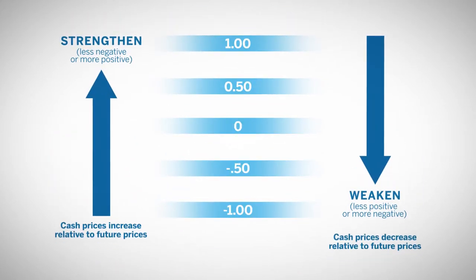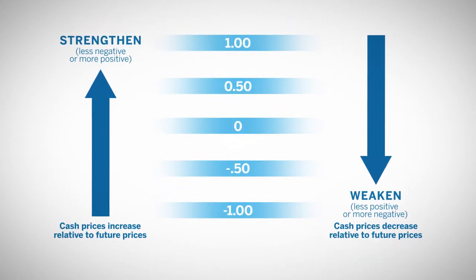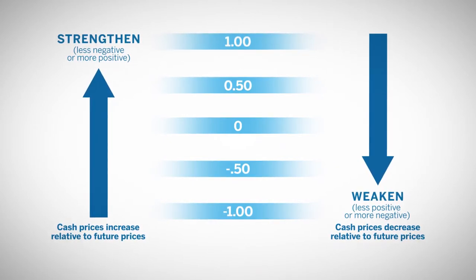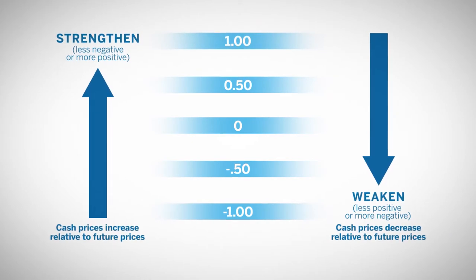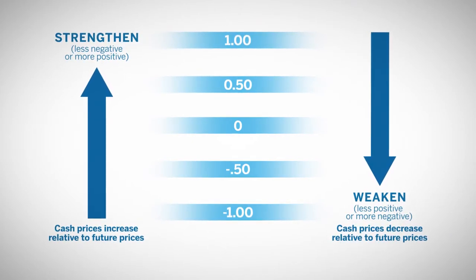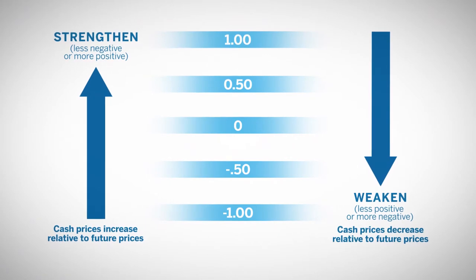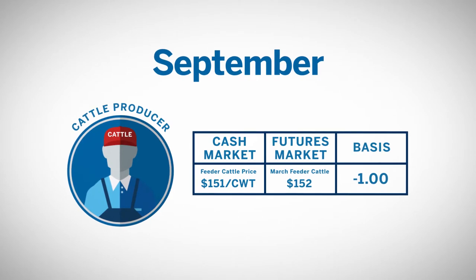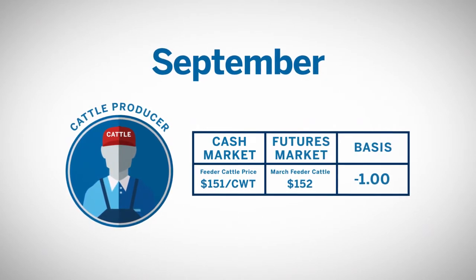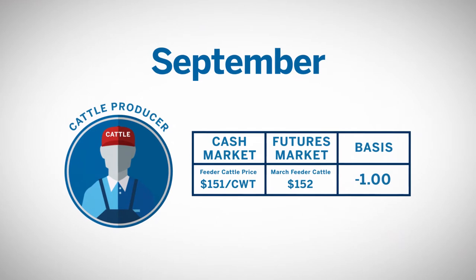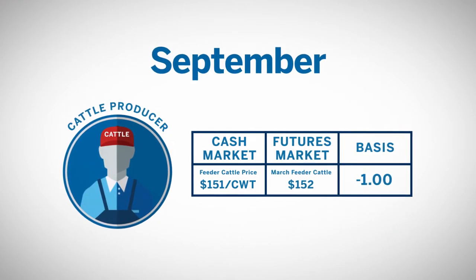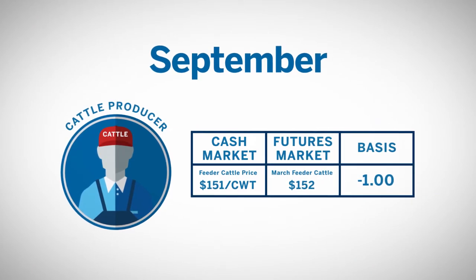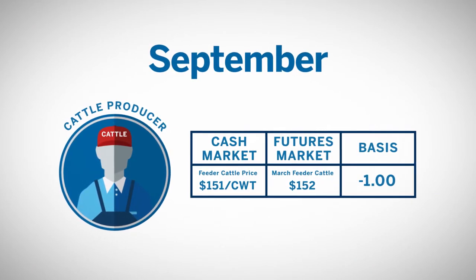One of the key considerations in understanding the basis is its potential to strengthen or weaken when cash prices increase or decrease relative to the futures prices. The more positive or less negative the basis becomes, the stronger it is. A strengthening basis will increase the selling price for a short hedger. In the previous example, suppose the basis in mid-February turned out to be $1 under rather than the expected $2 under. Then the net selling price, taking into account both futures and cash transactions, would be $151 per hundredweight rather than $150.